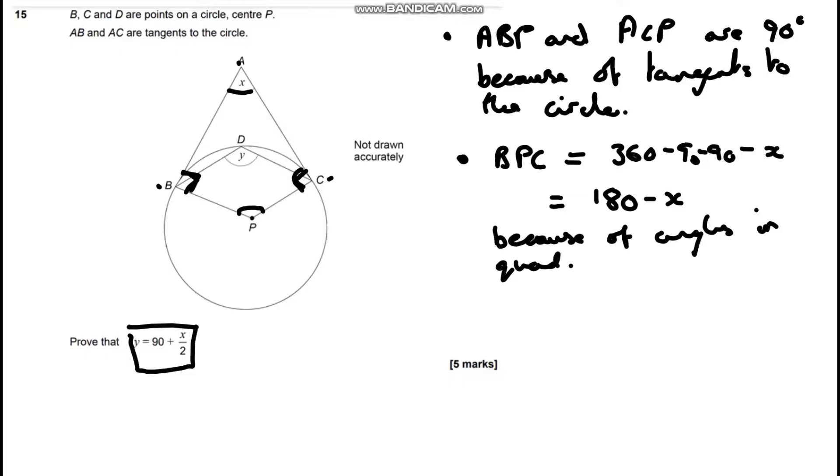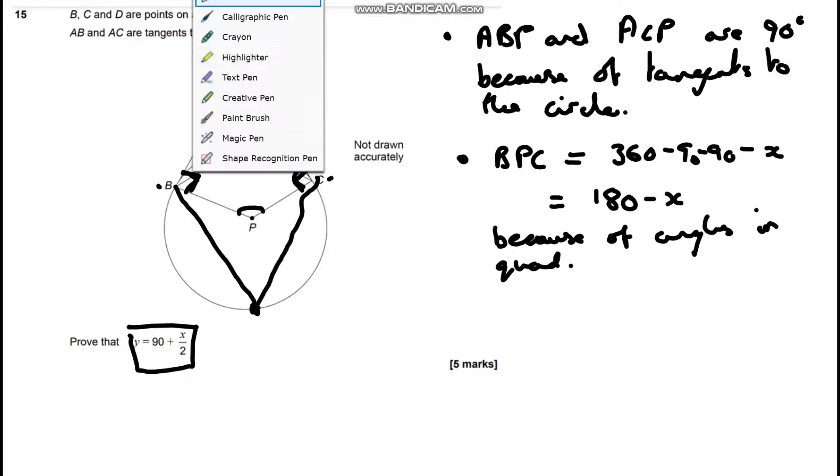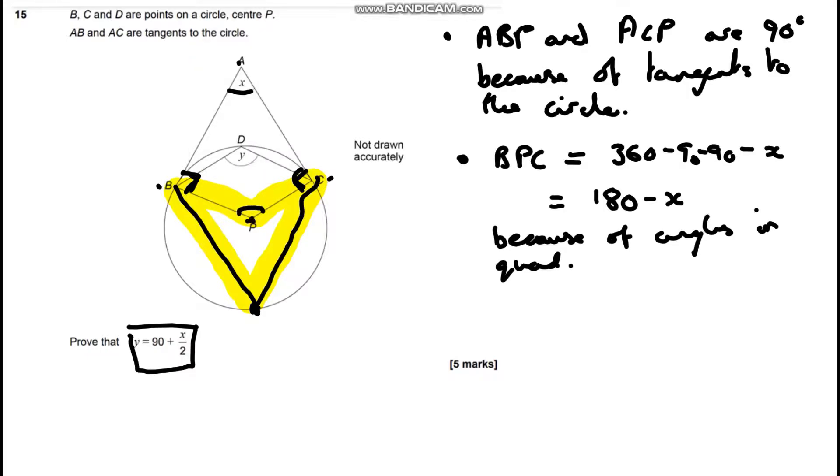What we're going to do next is extend this out to here so it is touching the circle there. What we've done is created a sort of arrowhead shape, a kite, where this point here is the center and this point here is on the circumference of the circle.